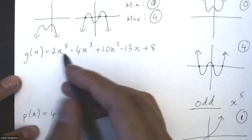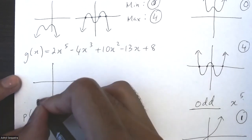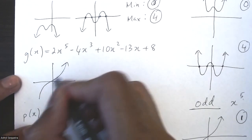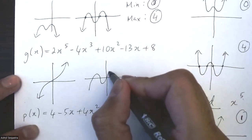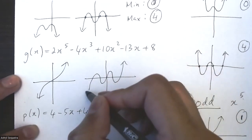Odd function over here, positive. So minimum number of zeros looks like this, which is one. Maximum number of zeros looks like this, which is five.